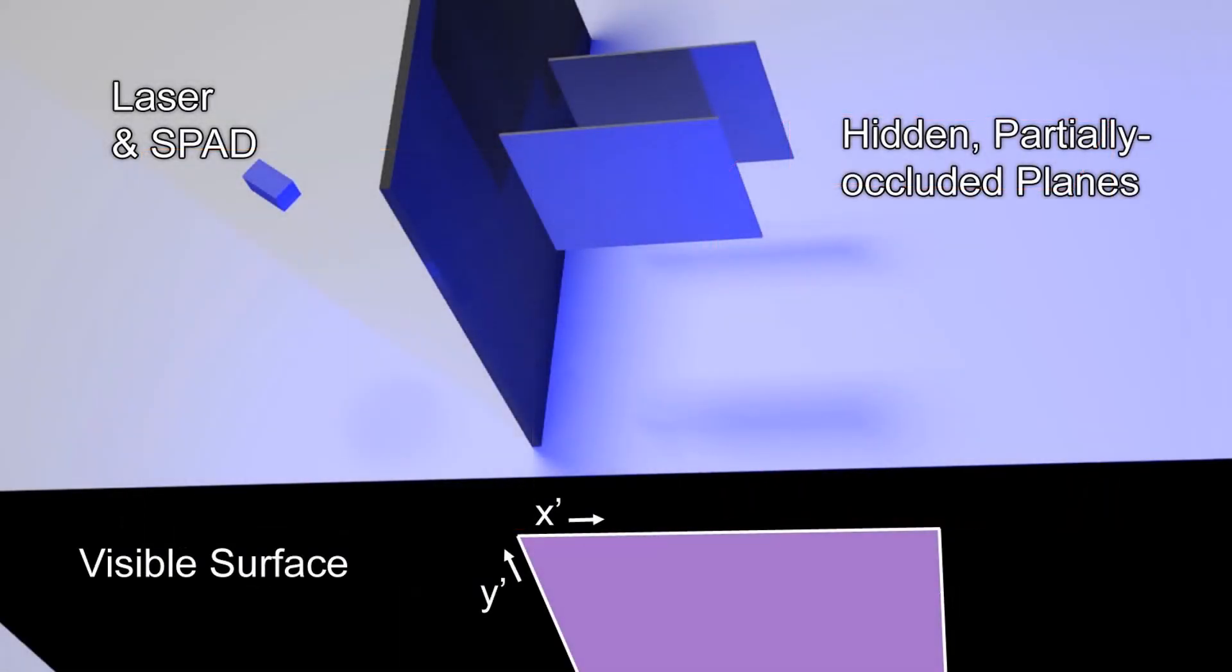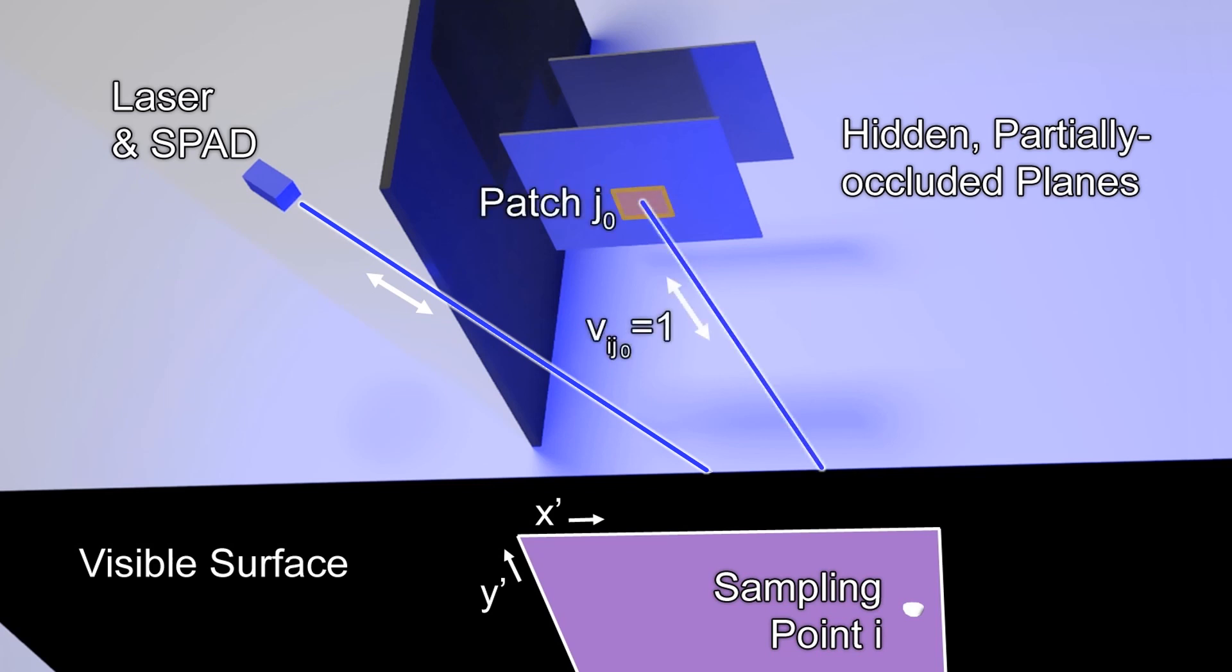The core idea of our algorithm is to model occlusions between hidden parts of the scene. From a sample point on the diffuse reflecting wall, light is reflected into the unknown hidden scene. Some light is reflected into the scene along unoccluded paths, but for non-trivial scenes, many paths can be partly or fully occluded.